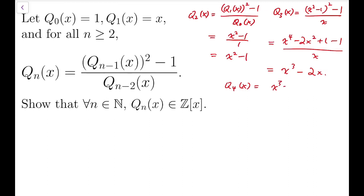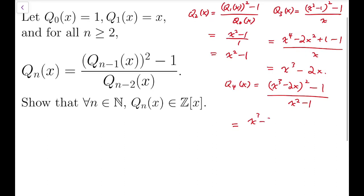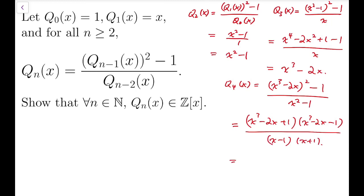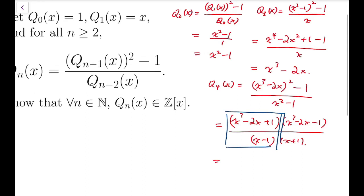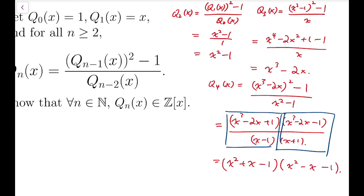For q_4(x), we get x cubed minus 2x, whole squared minus 1, over x squared minus 1. This factors as x cubed minus 2x plus 1 times x cubed minus 2x minus 1, over (x minus 1)(x plus 1). After simplification, the factors reduce nicely, giving us x squared plus x minus 1 times x squared minus x minus 1 — again a polynomial with integral coefficients.